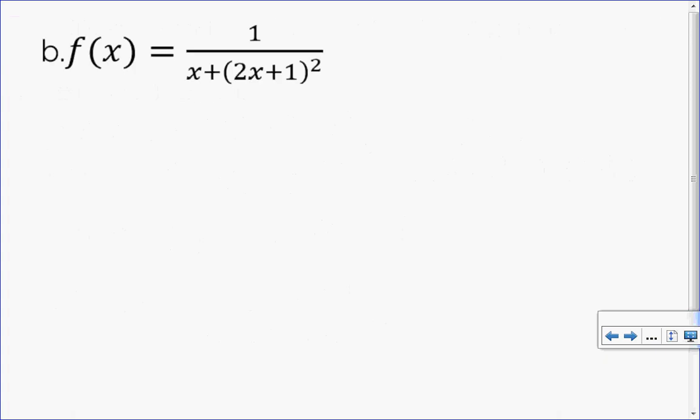Let's try this example here. So this is a reciprocal function, and again, I'm going to write it as a power function by taking the denominator and raising it to the negative one exponent. Now that I've done that, I can take the first derivative.